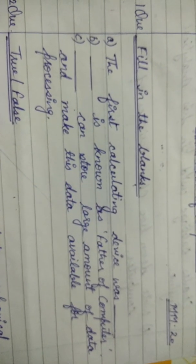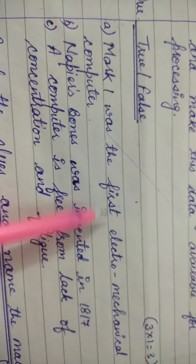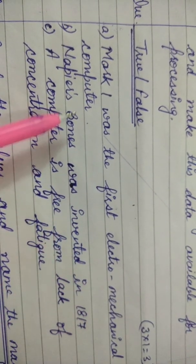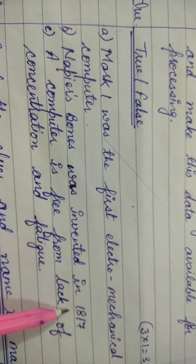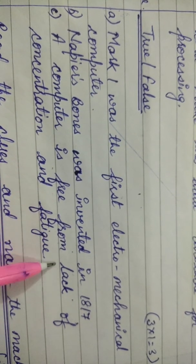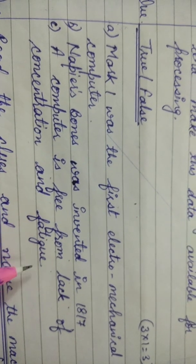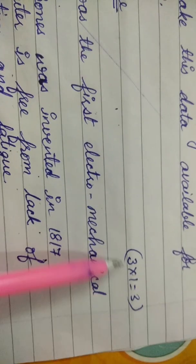Now question number two: True or False. Number one: Mark 1 was the first electromechanical computer. Number two: Napier's Bone was invented in 1817. Number three: A computer is free from lack of concentration and fatigue. Each true/false carries one mark, for a total of three marks.